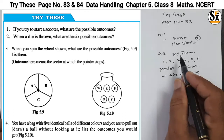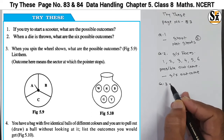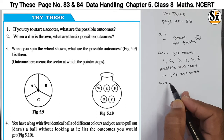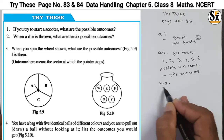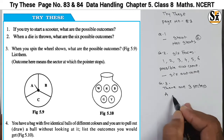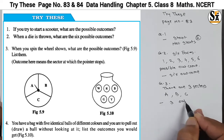The third question: see figure 5.9. When you spin the wheel shown, what are the possible outcomes? The outcome is the sector at which the pointer stops. We are spinning the pointer and it will stop anywhere on the three sectors. There are three sectors: A, B, and C.